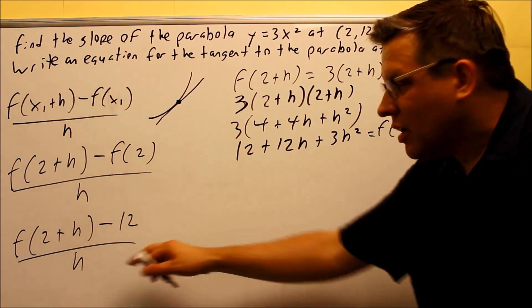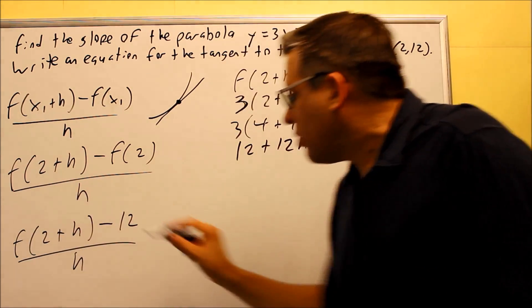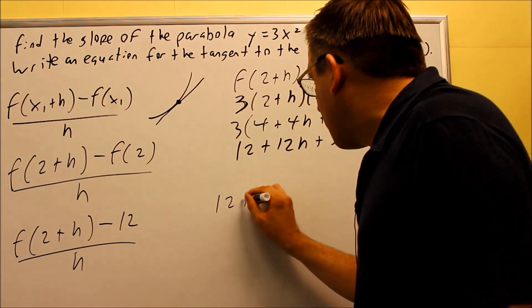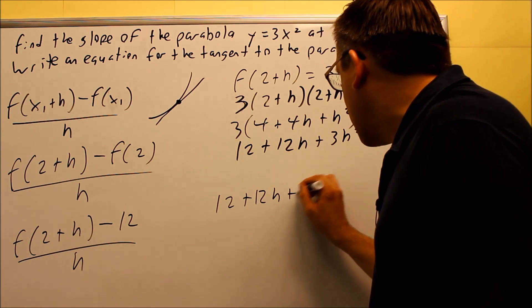So now I'm going to go back to the formula that we did. I'm going to replace the f of 2 plus h with this whole thing here. So I have 12 plus 12h plus 3h squared.